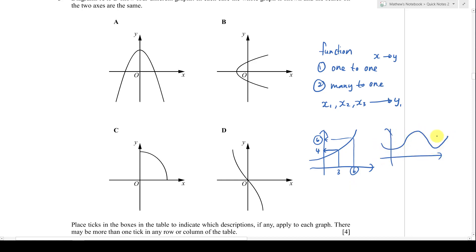For a many-to-one function, if I have a curve where one y value gives many different x values — for example, when y equals 4, I might get four different x values — then many x values go into one y value. This is called many-to-one, and this is also considered a function.